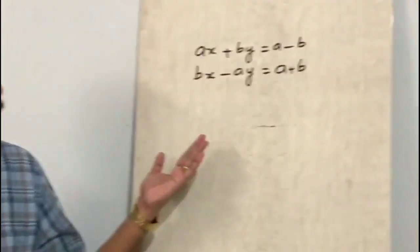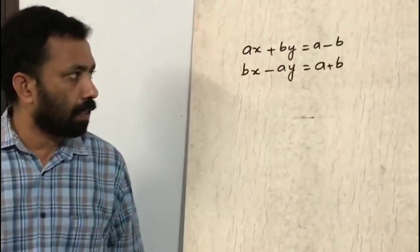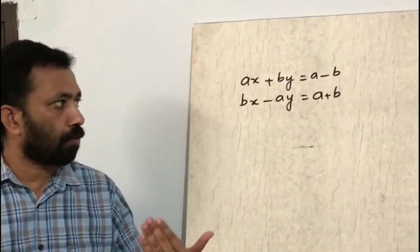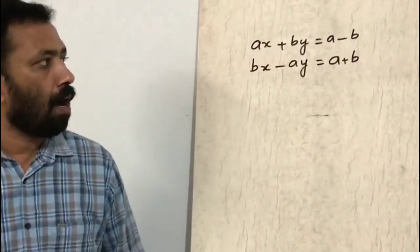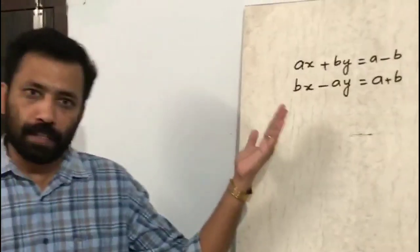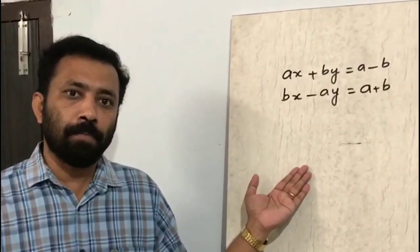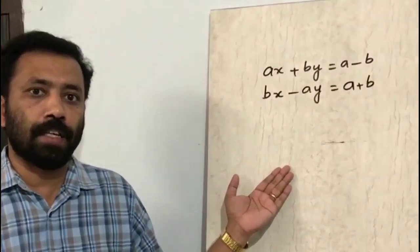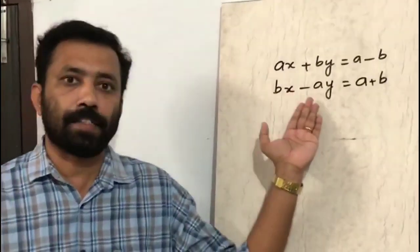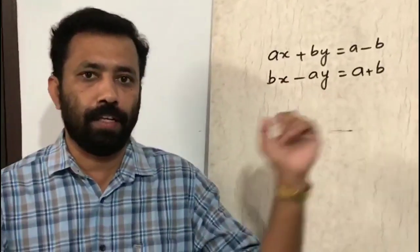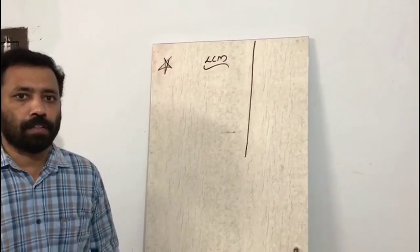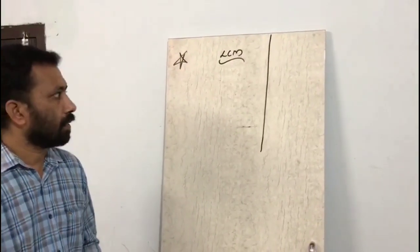For finding x and y we can use all three methods: substitution method, elimination method, and cross multiplication method. Out of these three methods, the elimination method is the simplest for finding x and y.